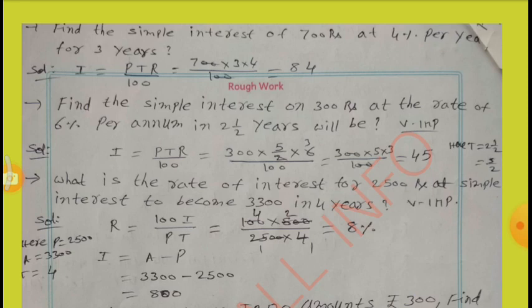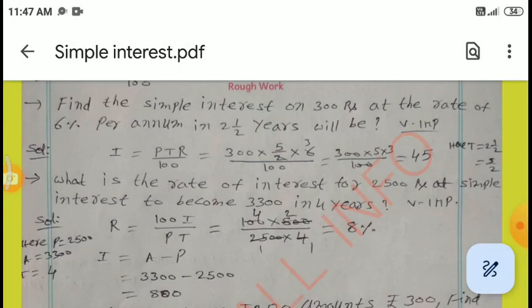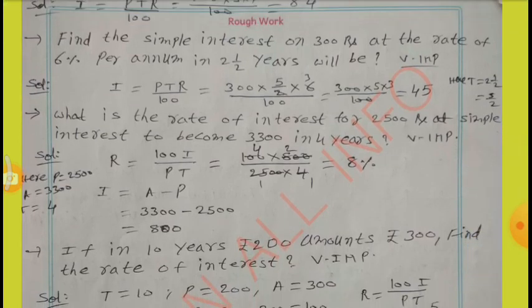What is the rate of interest for Rs.2,500 if the simple interest becomes Rs.3,300 in 4 years? Solution: We can find R using the formula R equal to 100 into I by PT. First, I equal to A minus P: 3,300 minus 2,500 equal to Rs.800. By substituting these values in the formula, we get R equal to 8%.